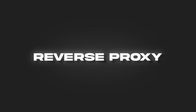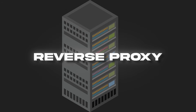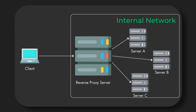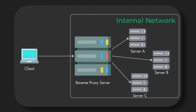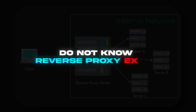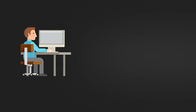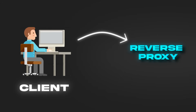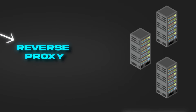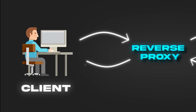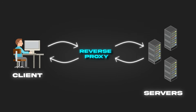A reverse proxy, by contrast, sits in front of servers and acts as a gatekeeper for requests coming in from users on the internet. Users do not know the reverse proxy exists — they think they are talking directly to the server. But in reality, the reverse proxy receives the request, forwards it to the appropriate back-end server, receives the response, and sends it back to the client.